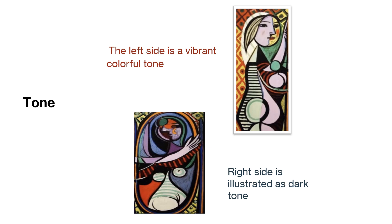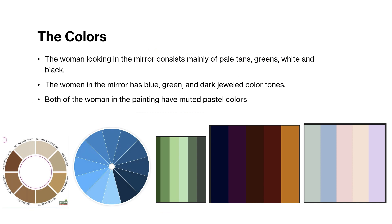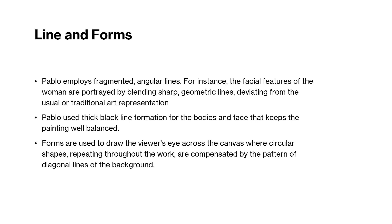So the tone — I believe the left side is a vibrant, colorful tone, and then on the right side is illustrated as a dark tone. The colors used for the woman looking in the mirror consist mainly of pale tans, greens, white, and black. The woman in the mirror used blue, green, and dark jeweled color tones. Both of the women in the painting have muted pastel colors.